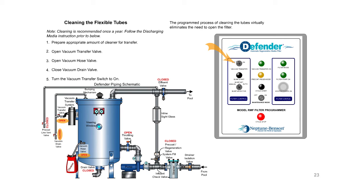Cleaning the flexible tubes. Cleaning is recommended at least once a season. Follow the discharging media instruction prior to these steps. The programmed process of cleaning the tubes virtually eliminates the need to open the filter. Prepare appropriate amount of cleaner for transfer. Open vacuum transfer valve. Open vacuum hose valve. Close vacuum drain valve. Turn the vacuum transfer switch to on.